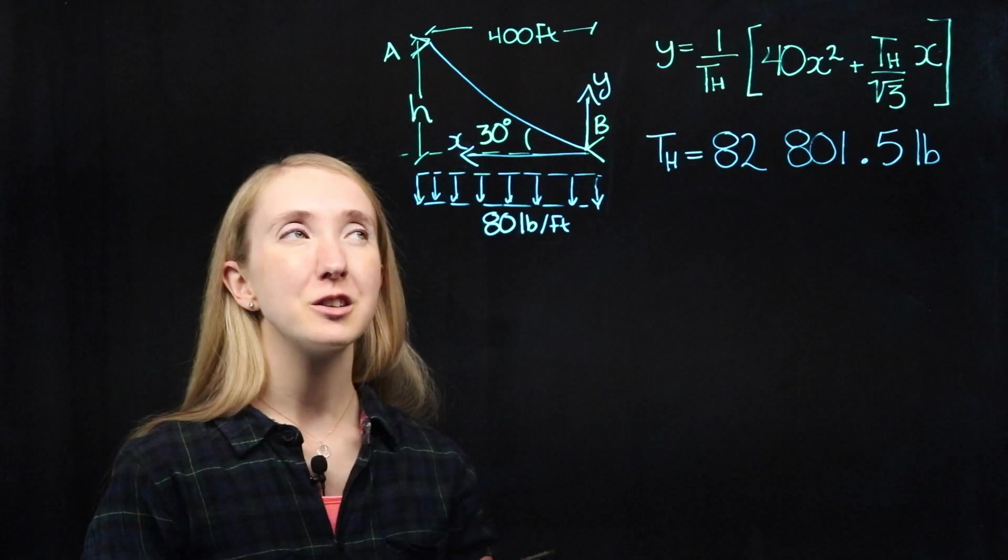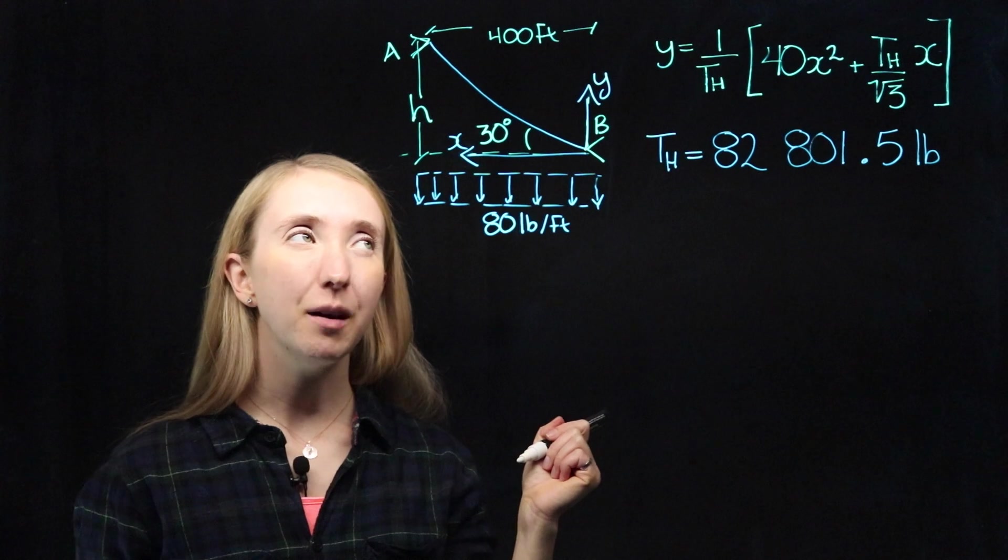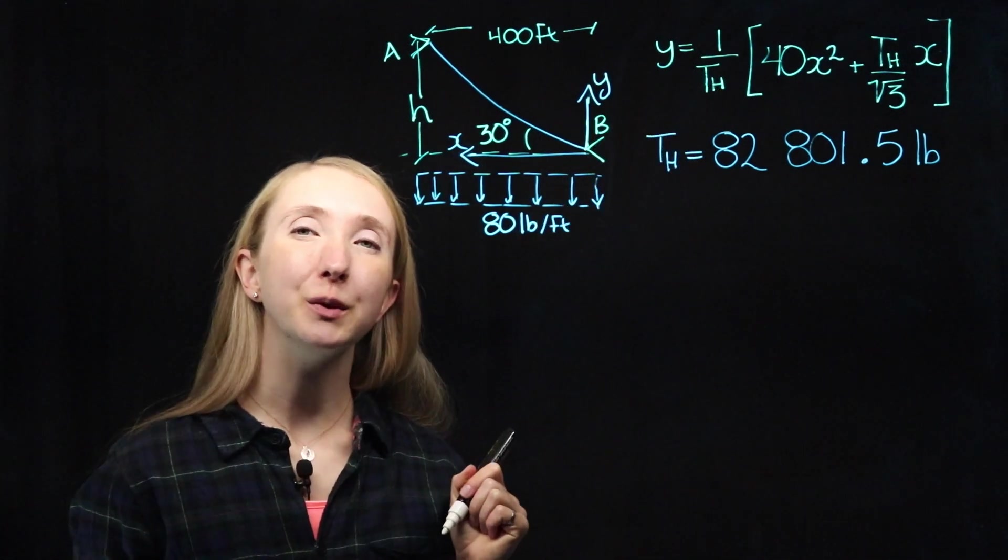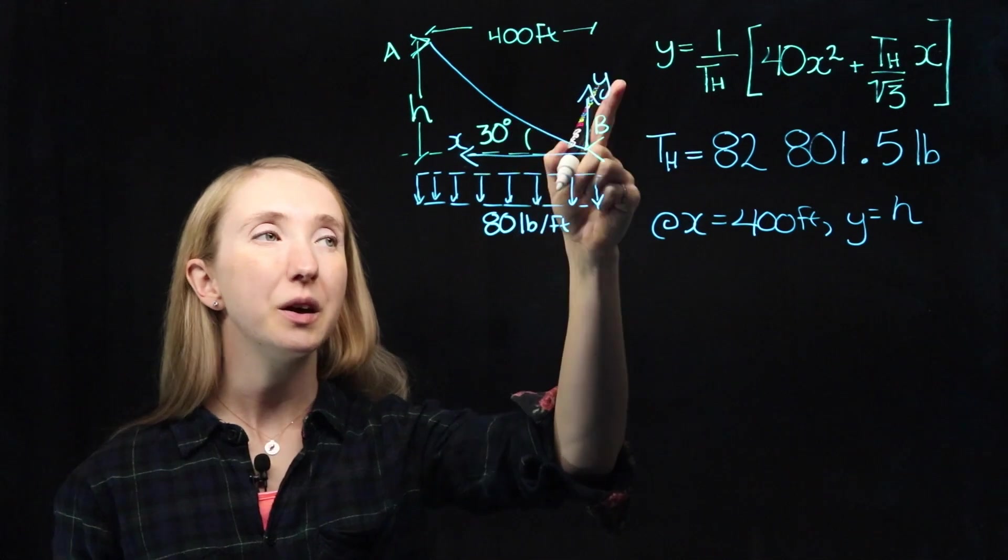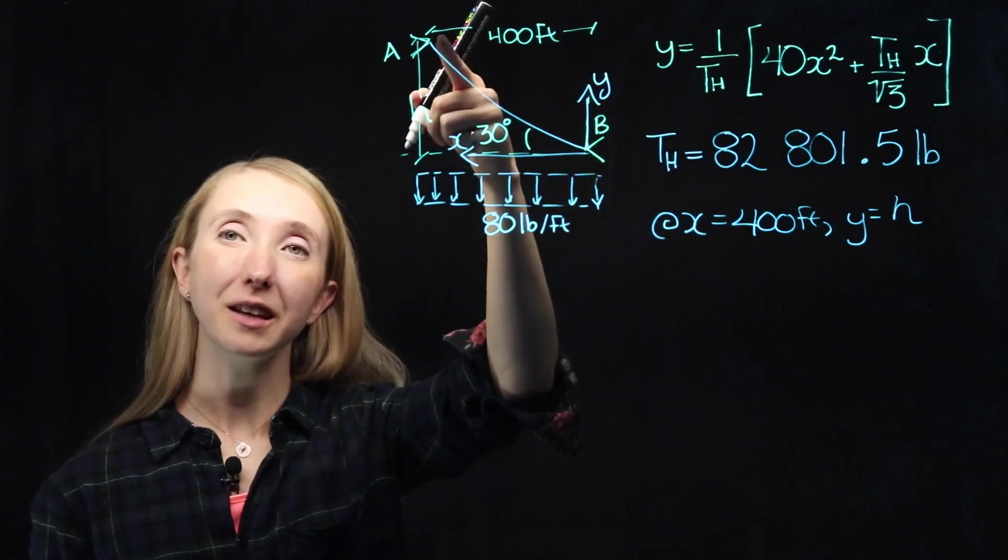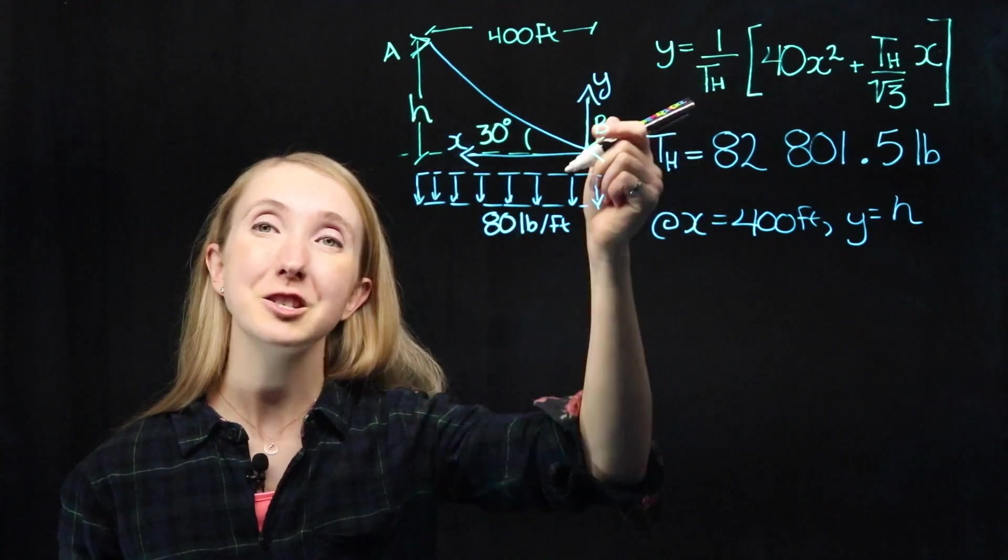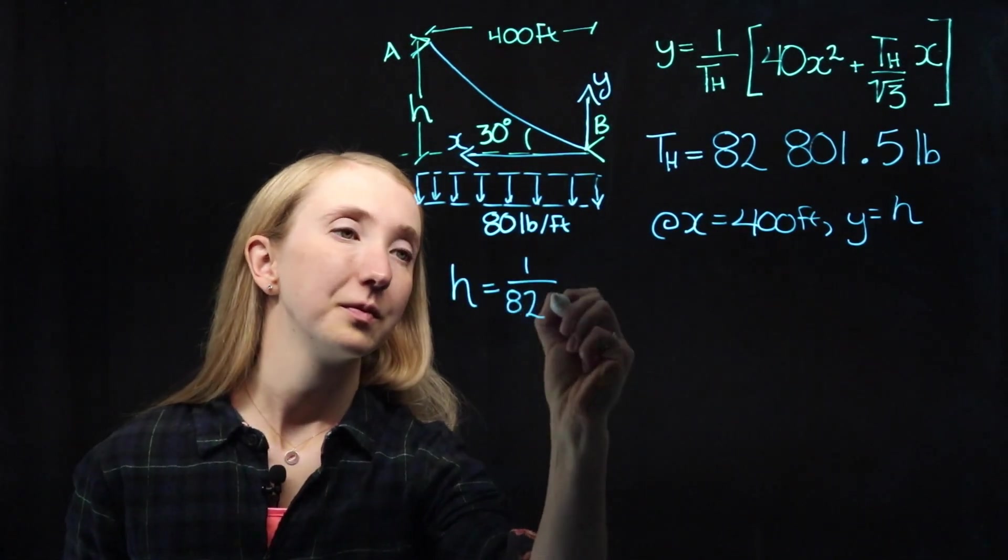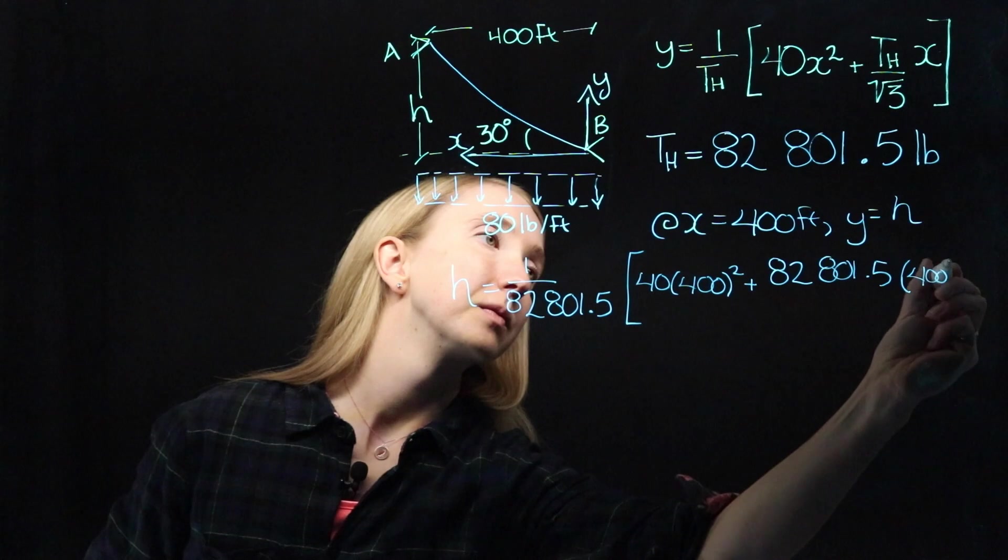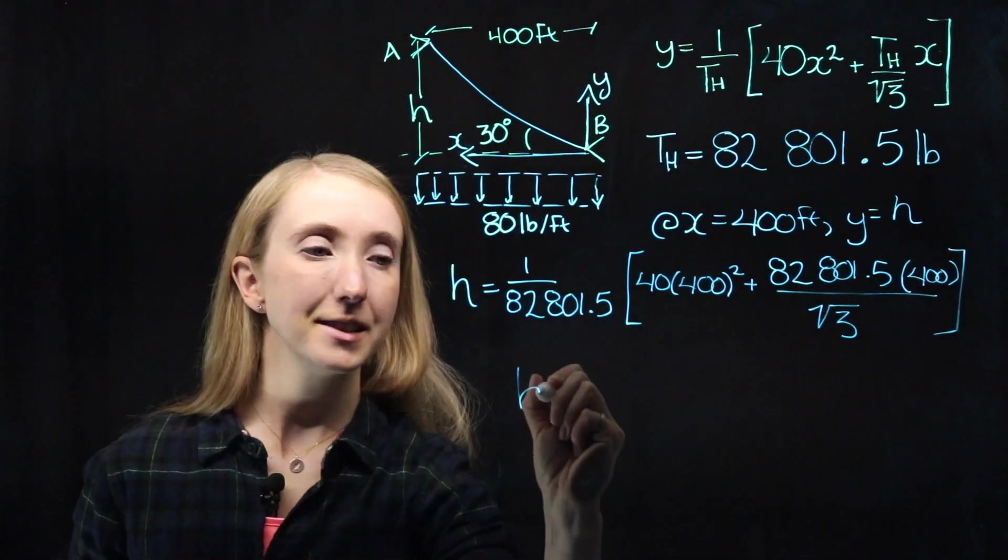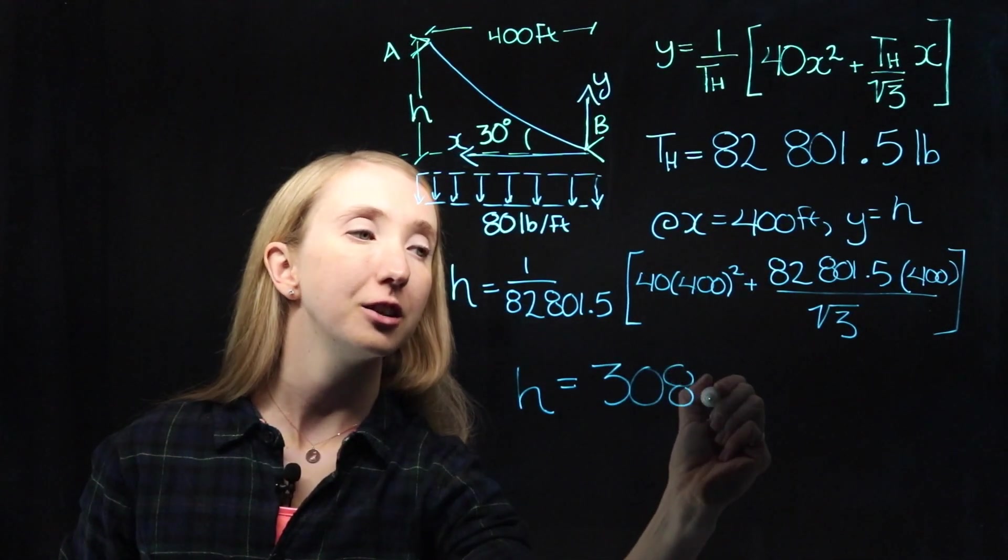At this point, from our original shape equation, we've found both our constants and our horizontal tension, TH. That means we're ready to use this equation to find our elusive h. From our system, we know that when our x value is equal to 400 feet, our y value must be equal to h. So we can plug these into our equation and solve. And we get that the elusive h to the nearest foot is equal to 308.